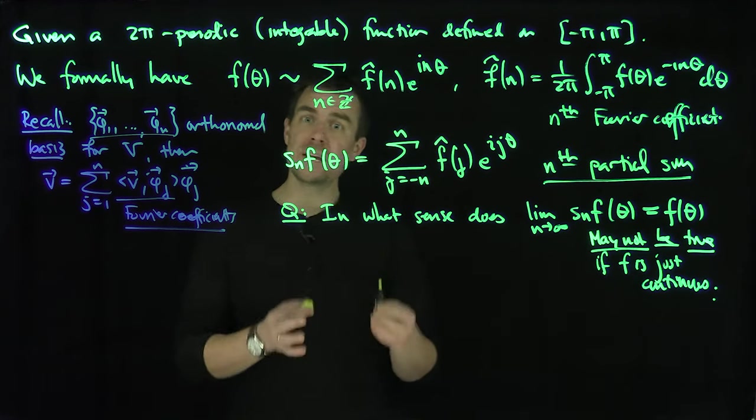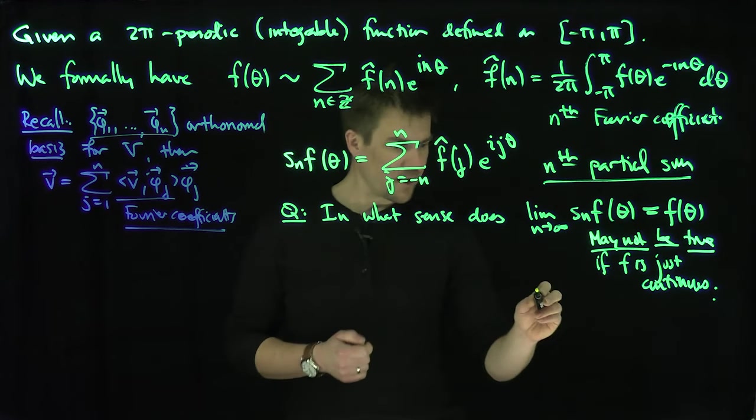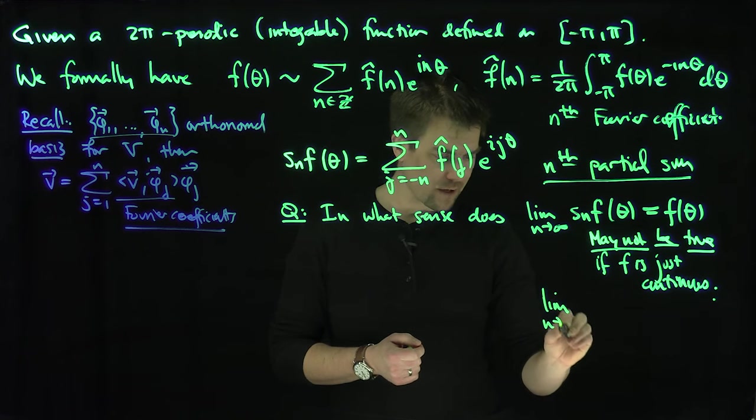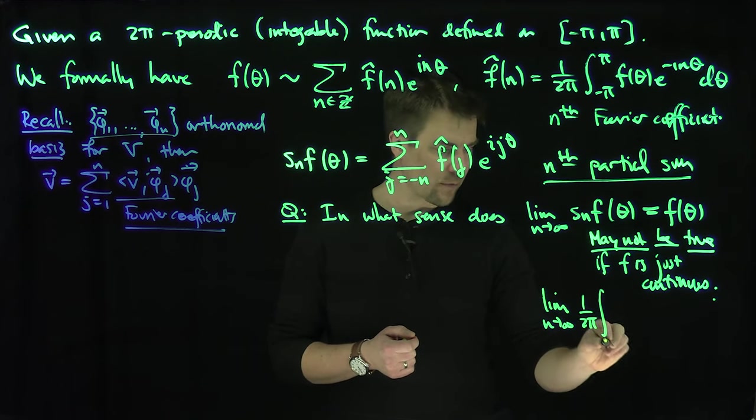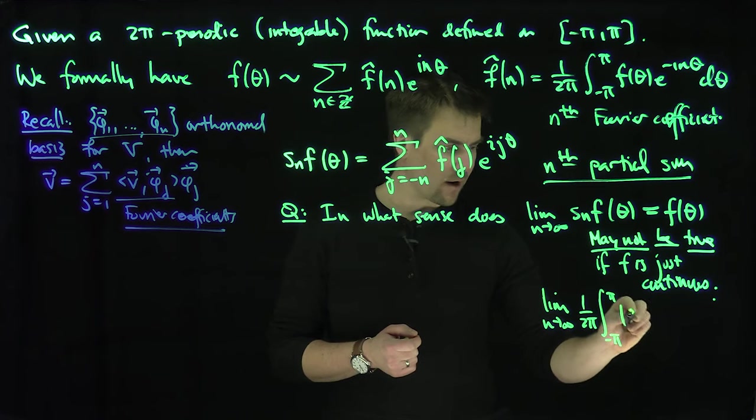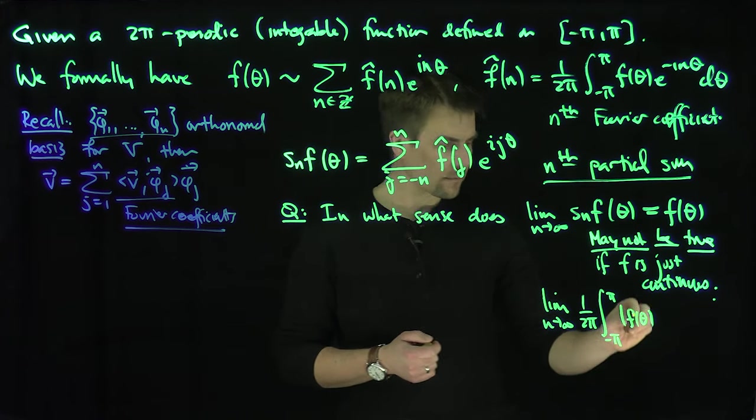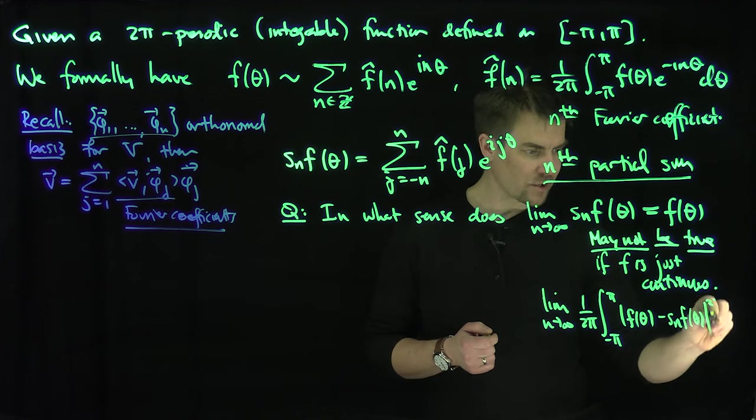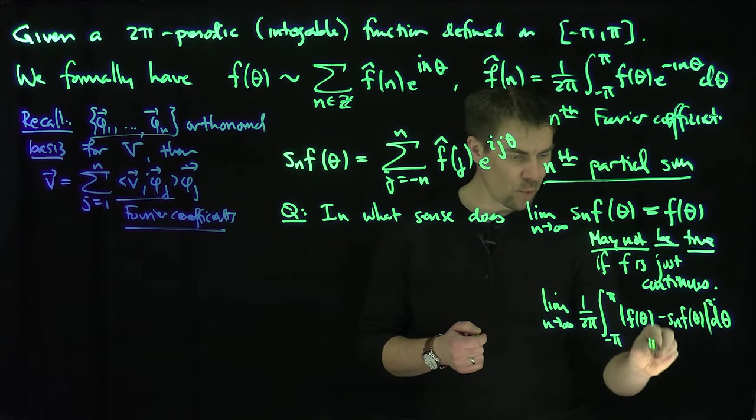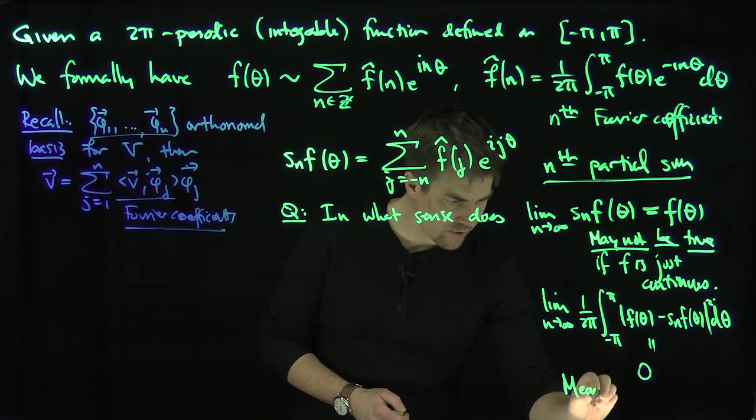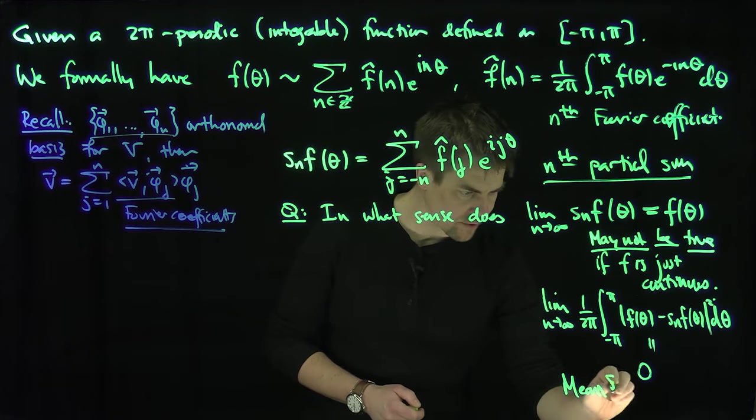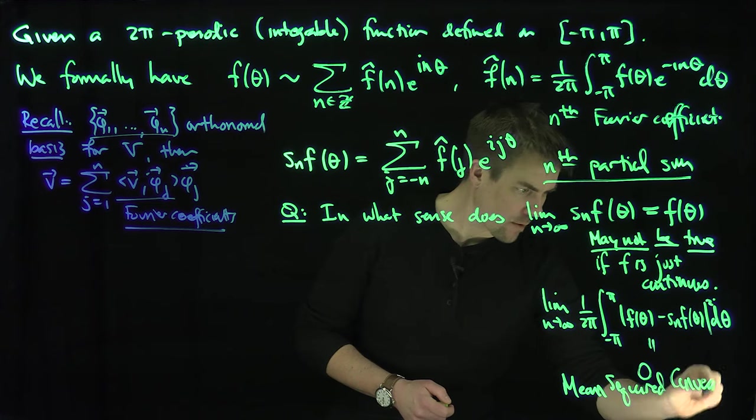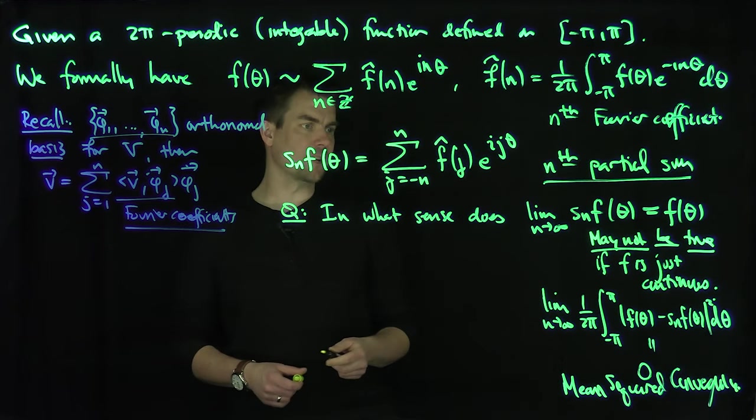We can say in further videos that there's a mean convergence to this. In other words, what is true is that if I look at the limit as n tends to infinity of 1/(2π) times the integral from negative π to π of |f(θ) - Sₙf(θ)|² dθ, this limit will be equal to 0. This is called mean squared convergence. We'll prove this in a different video.